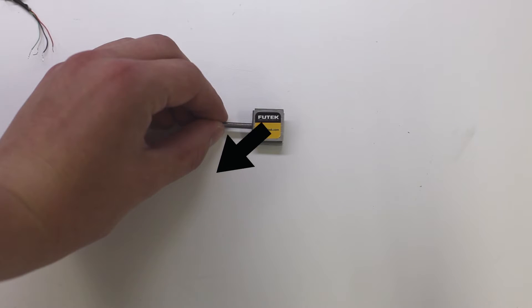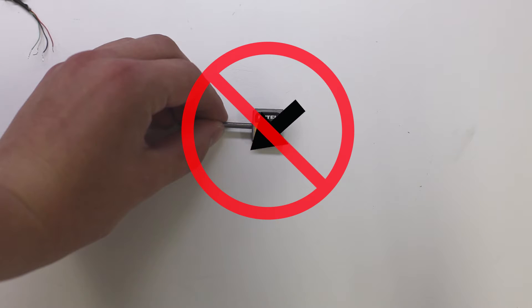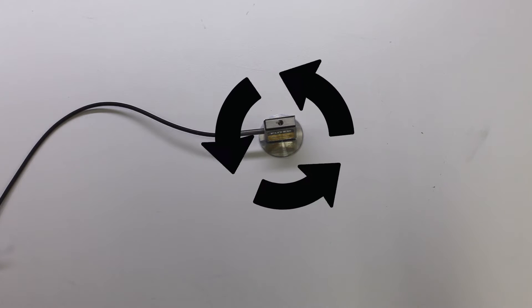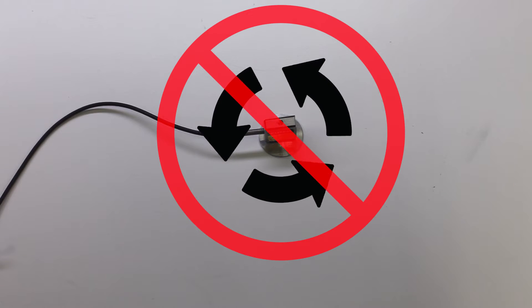The purpose of this tool is to ensure that there are no unintended forces applied to the load cell while attaching accessories. These extraneous forces such as torque and off-axis loads can damage the load cell if they are too strong.